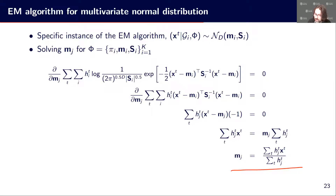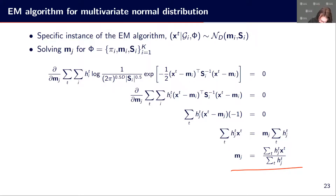This result is coherent with what we expect: we are looking at the association between x_t and group j. The difference compared to k-means is that the association is not crisp — it is not binary, not just zero or one. H_jt is between zero and one, so it is a probabilistic assignment. The average value takes into account this probabilistic membership association between x_t and group j, used as a weight when summing x_t, normalized by the sum of all H_jt.